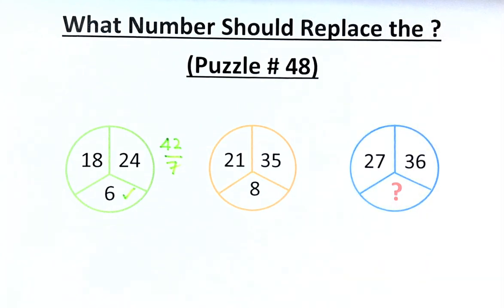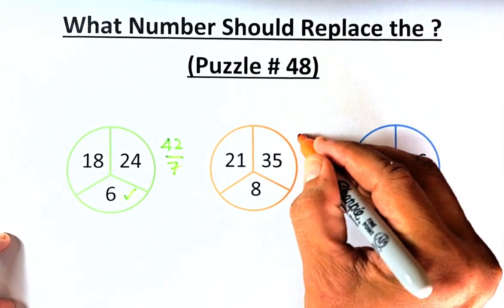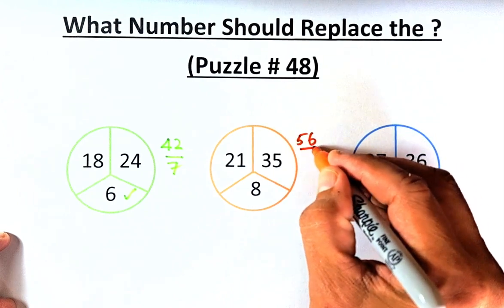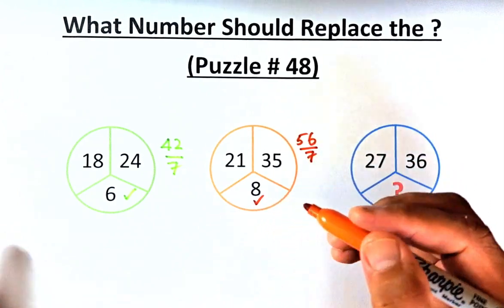In the second circle, 21, 35 equals 8. The same thing, 21 plus 35 is going to be 56, and then divide by 7 and that will give us 8.